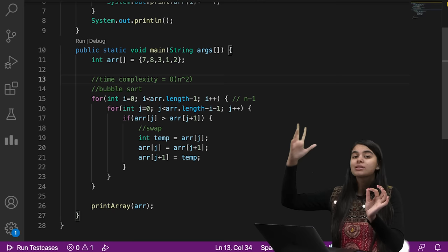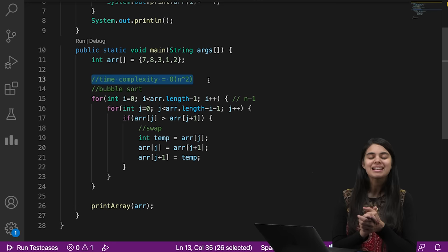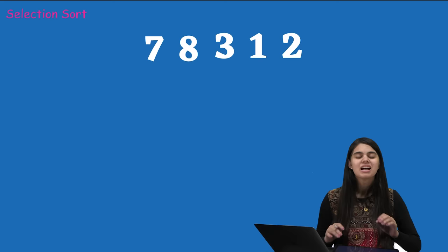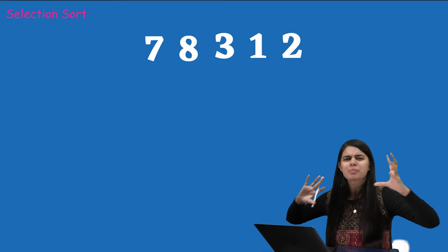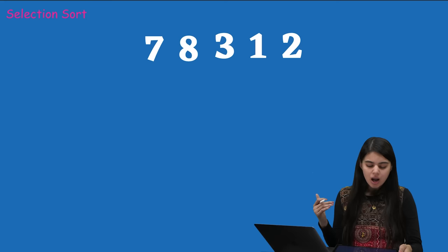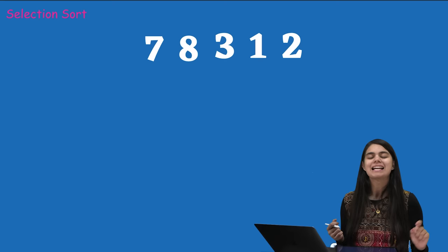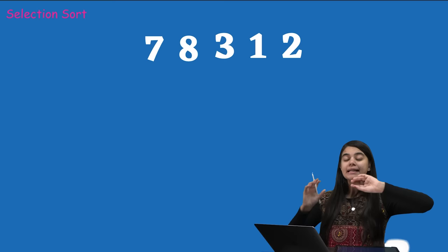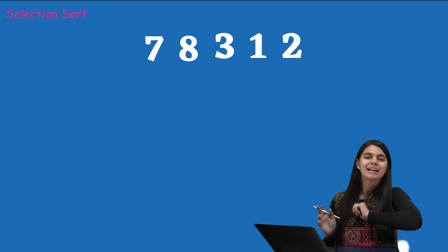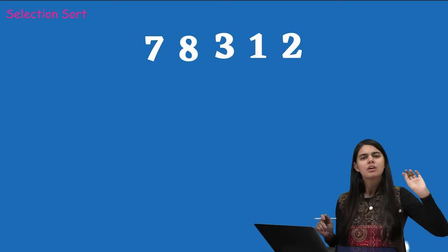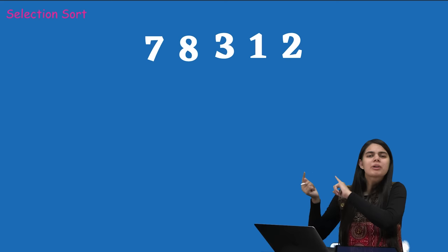Now let's talk about selection sort. Selection sort is like bubble sort but with a key difference: instead of pushing the largest element to the end, we find the smallest element and place it at the front. Also in selection sort, we run a full loop to find the minimum, then do only one swap per iteration — avoiding unnecessary swapping.